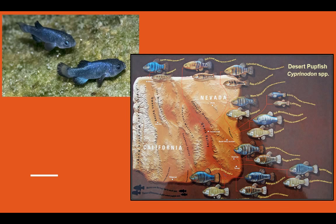Somewhere closer to home — Death Valley in Nevada and California — we have our pupfish. The desert pupfish is related to fish that existed quite a while ago when Death Valley wasn't the desert we see today. About 20,000 to 30,000 years ago there used to be large lakes in the region with many different types of fish. As the climate changed, many of those fish disappeared, became extinct, or are endangered. But now we see isolated groups of pupfish that have evolved in tiny springs in the region and are able to survive — another example of rapid evolution.